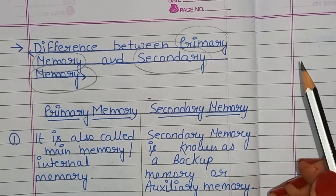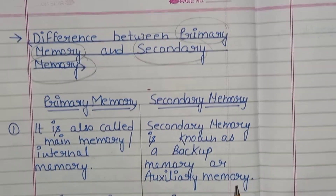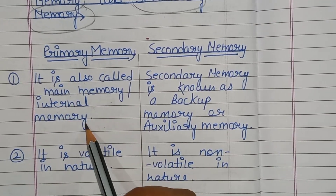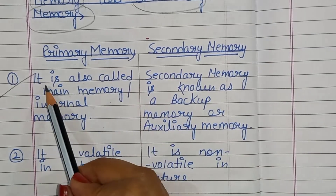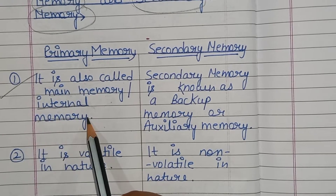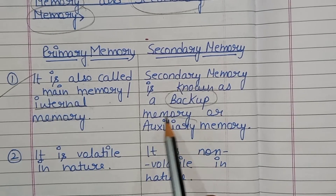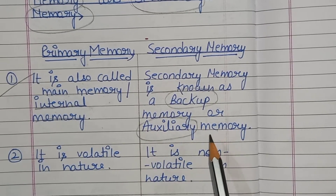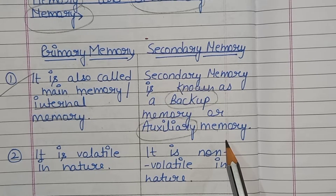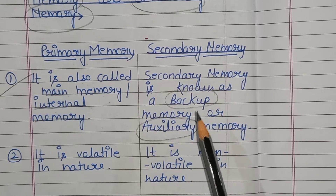Let's start with the difference between primary memory and secondary memory. The first difference is primary memory can also be called main memory and internal memory. Secondary memory is known as backup memory or auxiliary memory. In the exam, you can also be asked whether auxiliary memory is called primary memory or secondary memory — the answer is secondary memory.